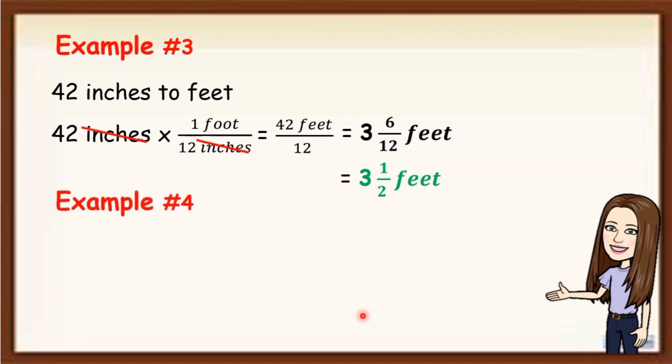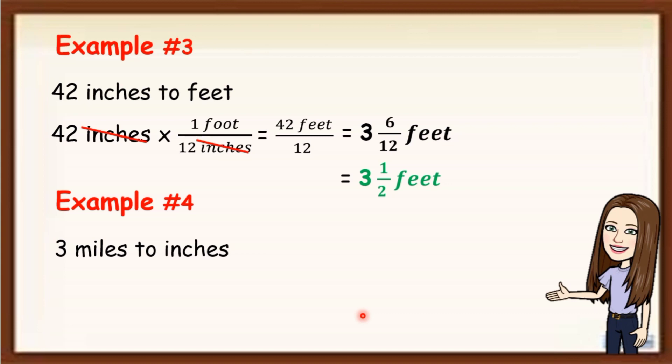Let's convert 3 miles to inches. Since walang direct conversion from miles to inches, let's convert first miles to feet. We all know that there is 5,280 feet in 1 mile. We are going to multiply 3 miles by 5,280 feet over 1 mile. Then, multiply again by 12 inches over 1 foot because we are looking for inches in this given.